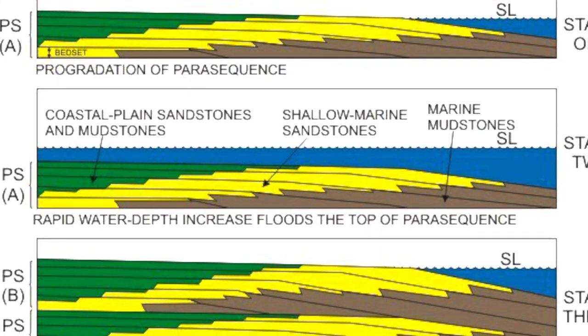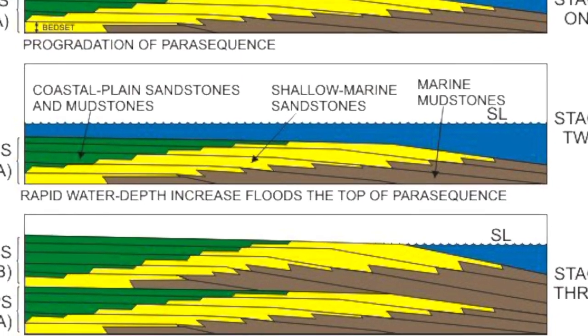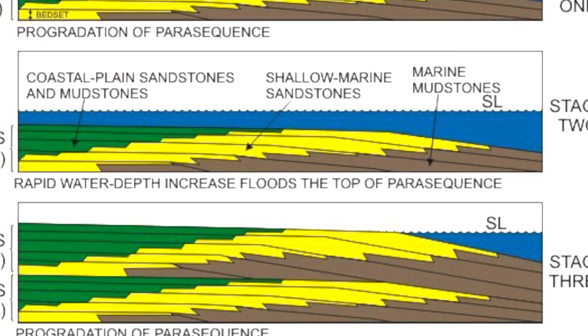We're going to do that here. There are three main bodies in the Farren — let's just call them parasequences. A parasequence means a body of sediment capped top and bottom by flooding surfaces, whether abandonment surfaces or transgressive surfaces because of sea level rise or whatever. It's just a single unit capped by discrete flooding surfaces.